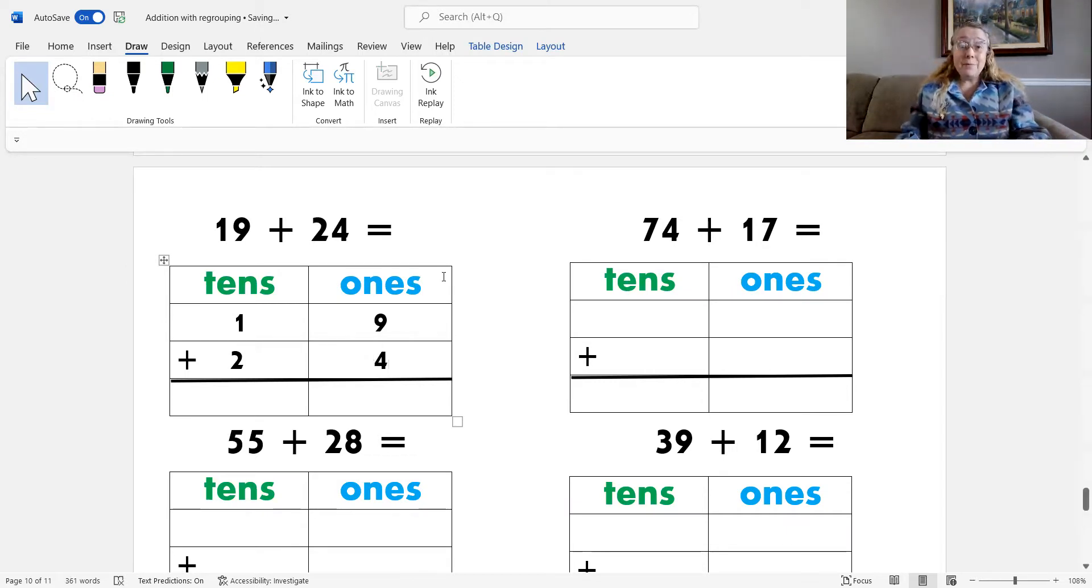What's our next step? Yes, our next step is to add the ones. So, I have 9 plus 4. Let's do that together. 9, 10, 11, 12, 13. That's 13. And I know that 13 is the same as 1 ten and 3 ones. So, the 3 ones go in the ones column, and I put the 1 ten into the tens column.